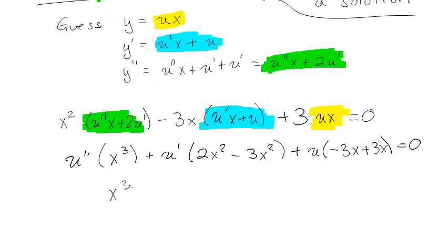So I've got x³u'' - x²u' = 0. Now what I'm going to do is factor out an x², and it's going to give me xu'' - u' = 0. Good.